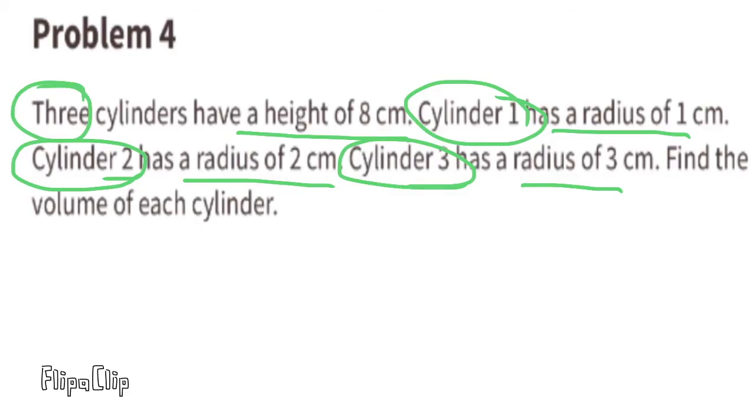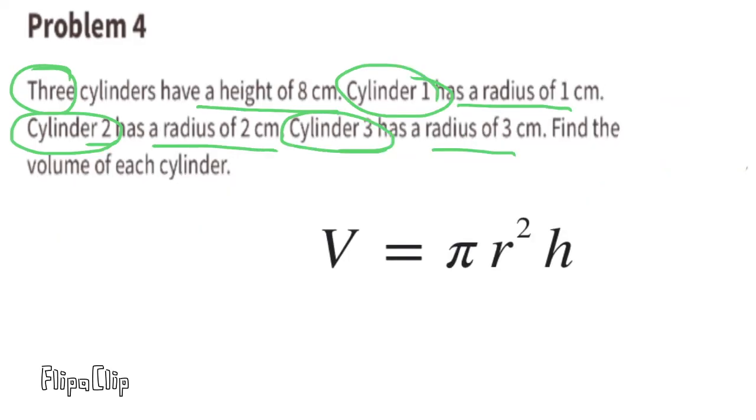Problem number 4. 3 cylinders have a height of 8 centimeters. Cylinder 1 has a radius of 1 centimeter. Cylinder 2 has a radius of 2 centimeters. Cylinder 3 has a radius of 3 centimeters. Find the volume of each cylinder. The formula for finding the volume of a cylinder is pi times r squared times height.